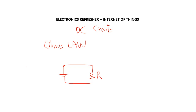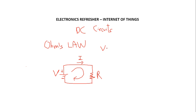Here we have our resistor and our battery. This is the plus terminal and this is the ground — the minus. The current is going to flow in that direction. And the linear relationship between the voltage and the current in the electrical circuit is going to be Ohm's Law.